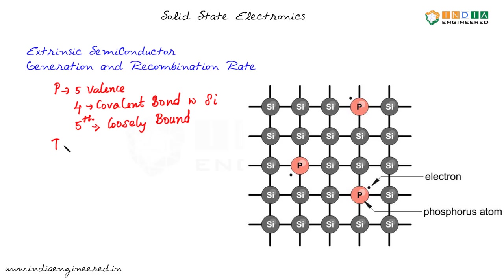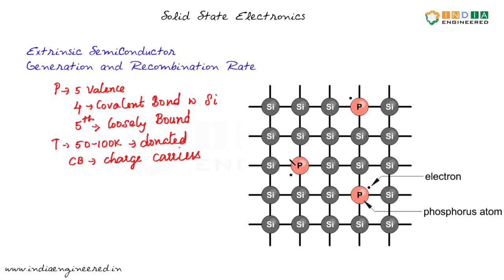Even at small temperatures like 50 to 100 Kelvin, these electrons are donated to the crystal. When an electron is donated to the crystal, it moves to the conduction band. Conduction band electrons can act as charge carriers. So phosphorus donated an electron to the system — that is why we say phosphorus is a donor. It donated an electron to the crystal and thereby created an N-type semiconductor.